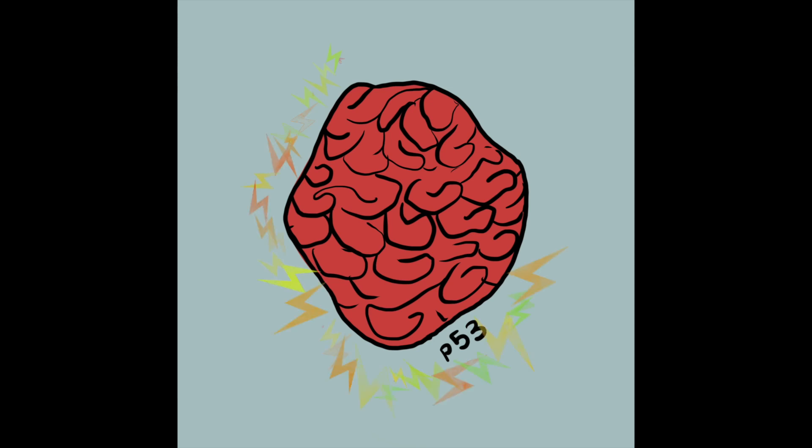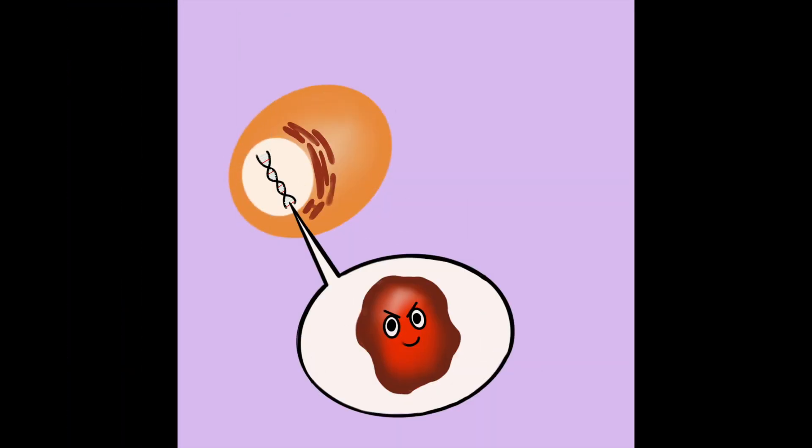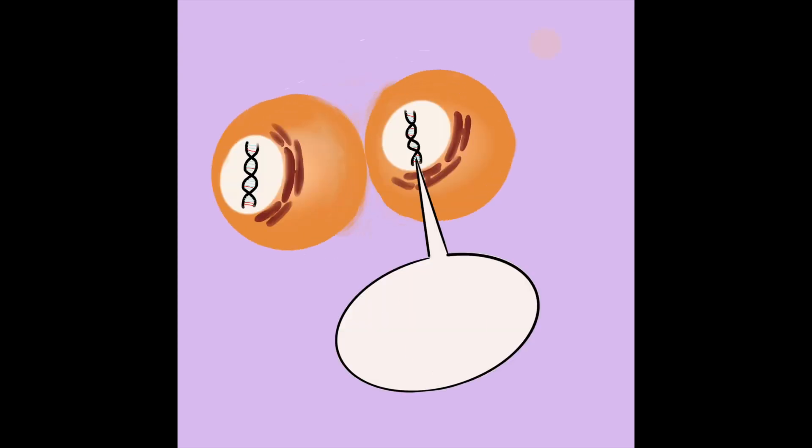When this happens, the p21 won't be made and the cell keeps dividing even when there are typos in the DNA, resulting in more and more mistakes in the DNA. Mutated p53 plays a role in around 50% of all human cancers.